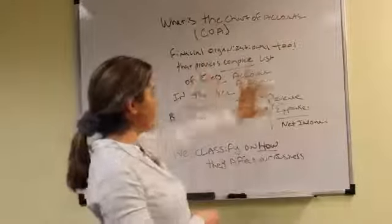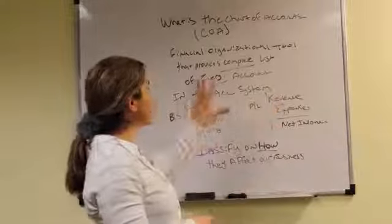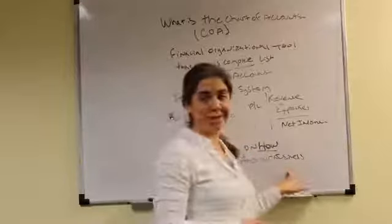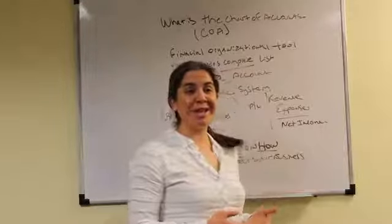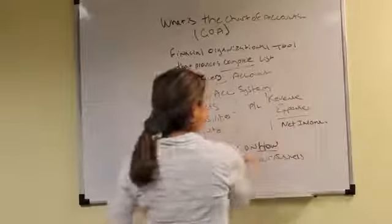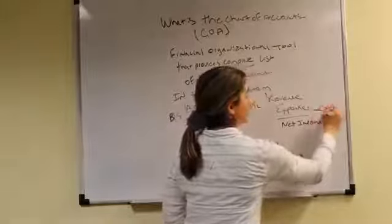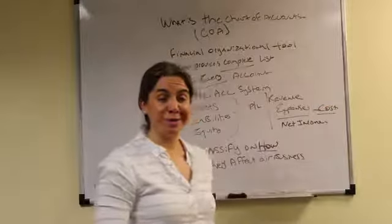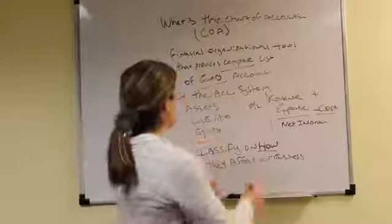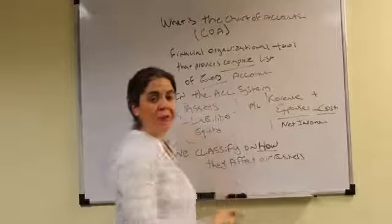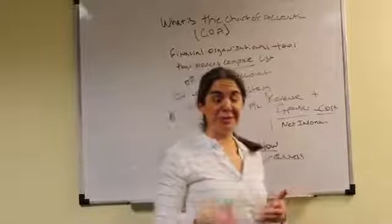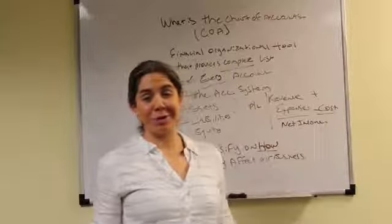When we look at our chart of accounts, this is really just a representation of how we classify anything that affects our business. Anything that costs us money sits on our profit and loss under expenses. Any money that we make goes here, and anything that we owe goes here — it sits on a completely different financial statement. I'm going to do a series of videos on the chart of accounts, but this is just a brief overview to get going.